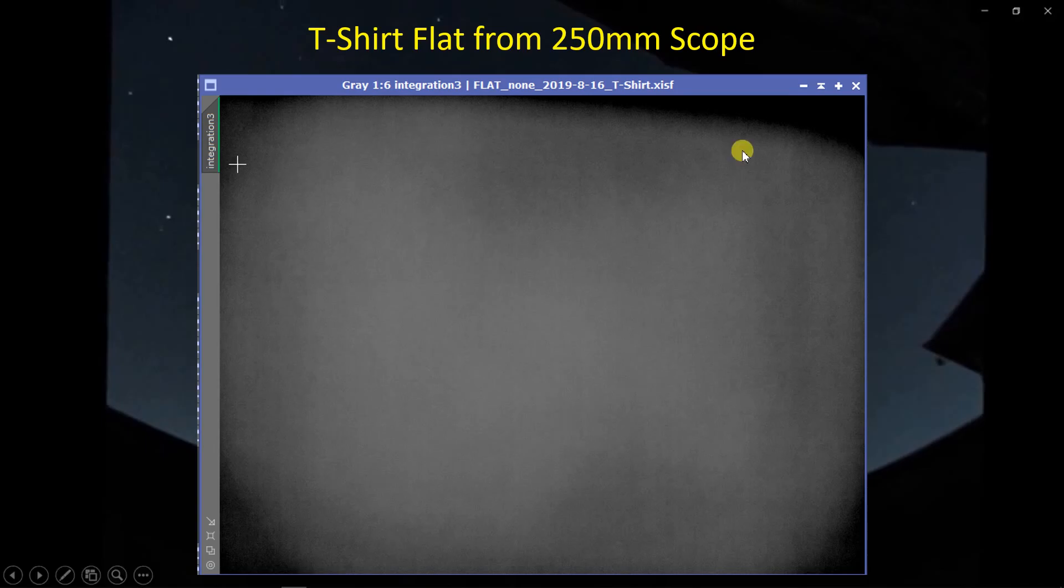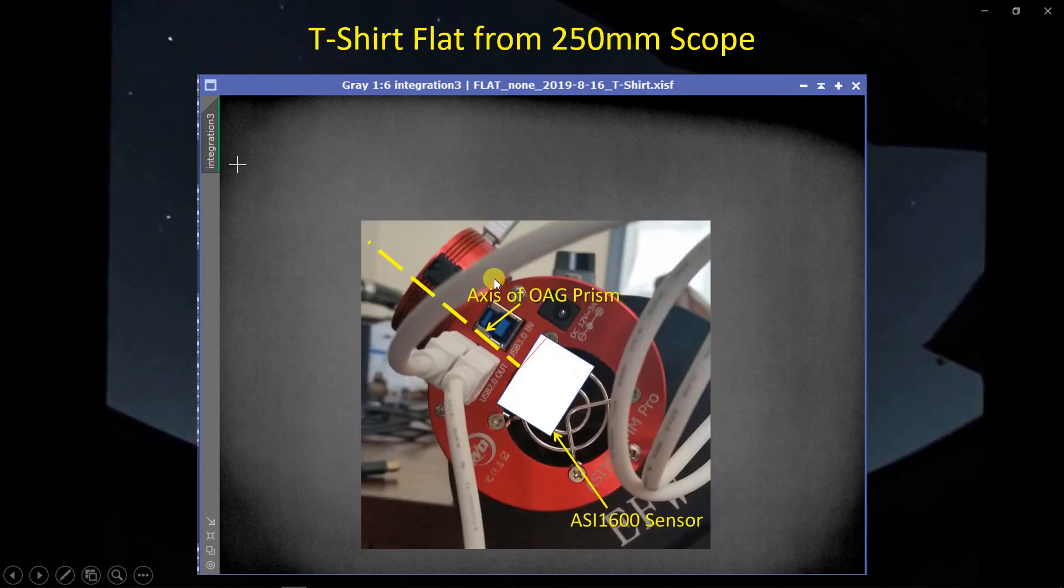Now here's a T-shirt flat from the 250 millimeter scope and what you can see here is there's an edge coming down along at an angle here. Well what that is, if you look at how the off-axis guide camera right here is oriented relative to the sensor of the imaging camera, you can see that the axis of the prism is tilted relative to the axis of the imaging sensor. And that means the base of the prism is going to follow a line right along here. So in other words this shadow, the light is not blocked, it's just a shadow is the shadow of the prism on this side of the imaging sensor. Now again the flats take care of this so it's not a big deal but that's what that little edge is.